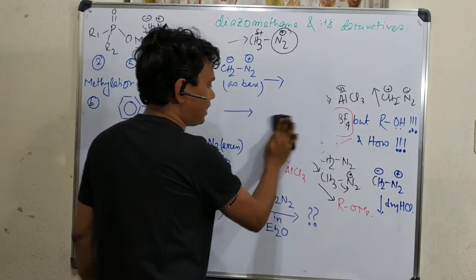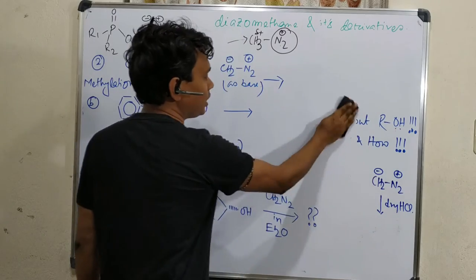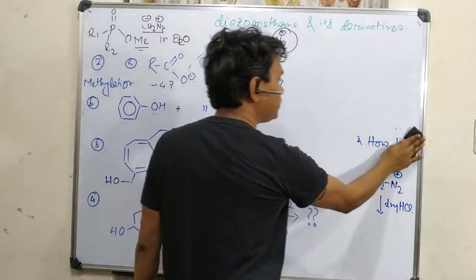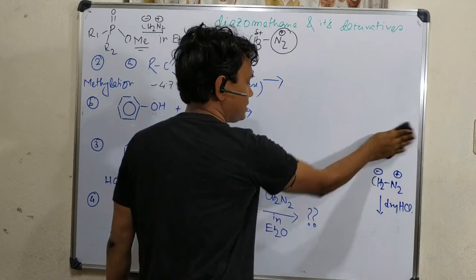The basic difference we have learned is that in case of alcohol we need a Lewis acid or a non-nucleophilic protic acid, but in case of phenol or carboxylic acid it doesn't need because the bonds are strong enough.